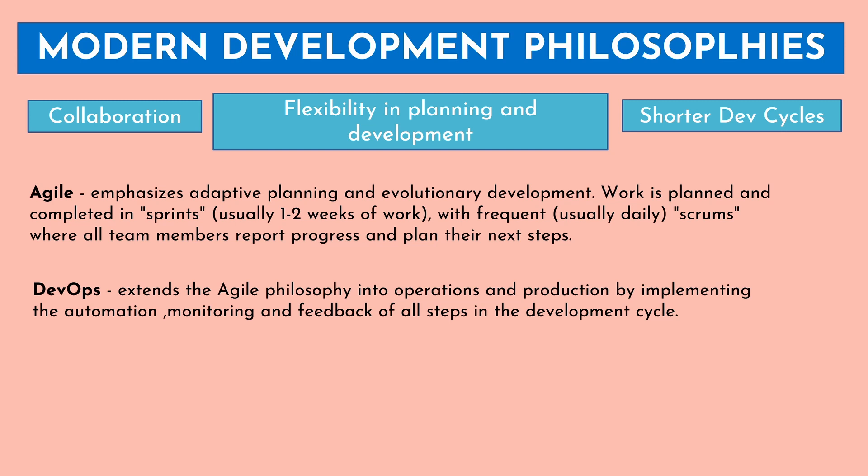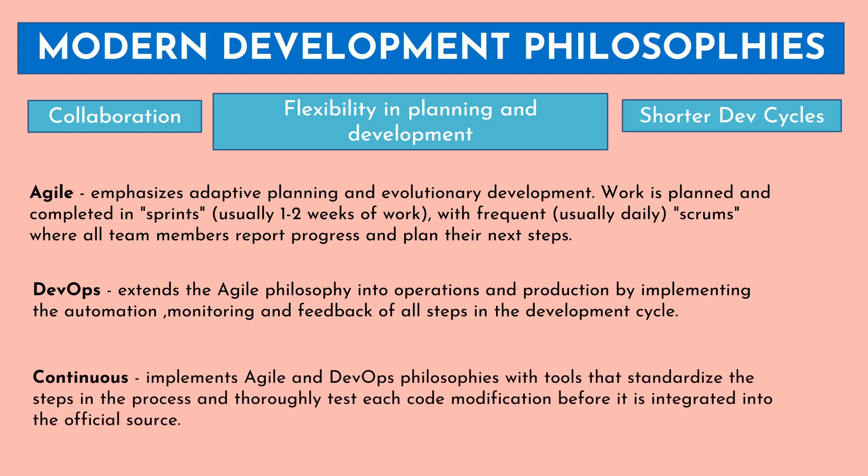DevOps extends the Agile philosophy into operations and production by implementing automation, monitoring, and feedback of all the steps in the development cycle. Sometimes DevOps is considered as a usage of tools to automate different tasks in the CI-CD process. However, DevOps is merely a cultural change which brings all the teams together under one single umbrella and removes all the bottlenecks that were there as part of the previous deployment methodologies. Continuous implements Agile and DevOps philosophy with the help of tools that standardize the steps in the process and thoroughly test each code modification before it is integrated into the official source code.